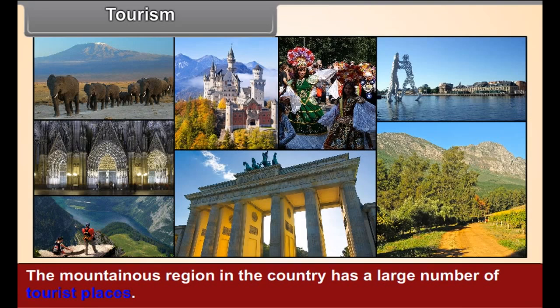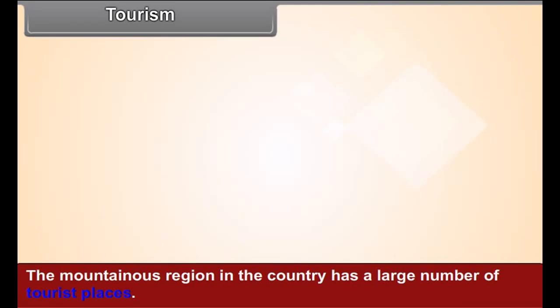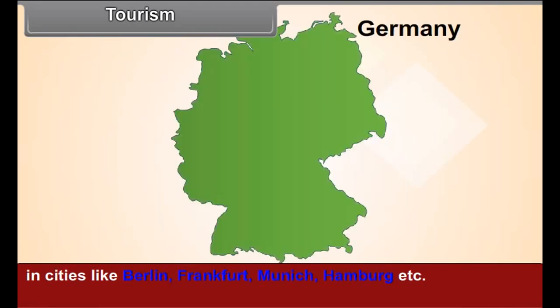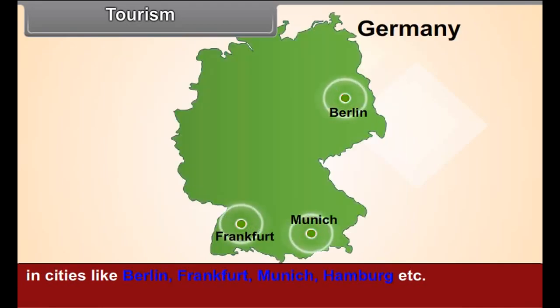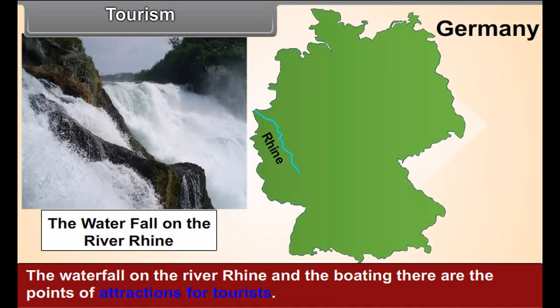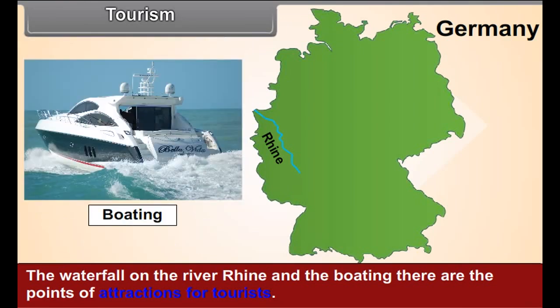The mountainous region in the country has a large number of tourist places. One can see places of historical importance in cities like Berlin, Frankfurt, Munich, Hamburg, etc. The waterfall on the river Rhine and the boating there are major points of attraction for tourists.